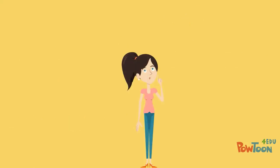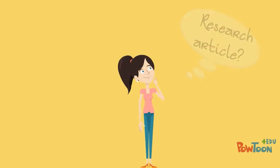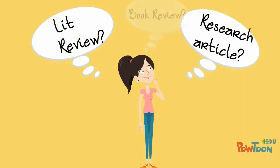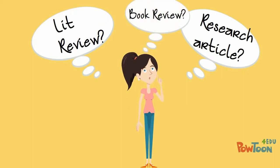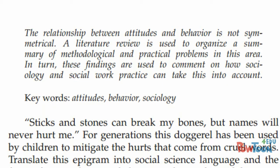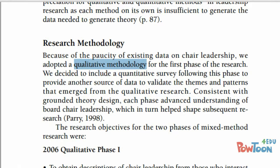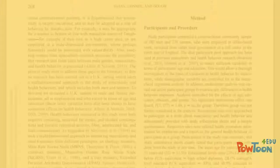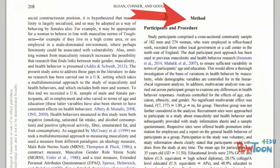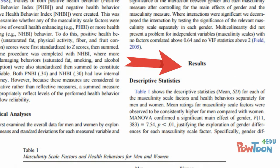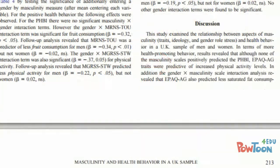At first, Anne sometimes had difficulty determining which type of article she had found. However, she learned to carefully read the abstract for the article, as this often described what type of article it was. She also realized that research articles often have a specific format, with clearly labeled sections such as a methods section, a results section, and a discussion section.